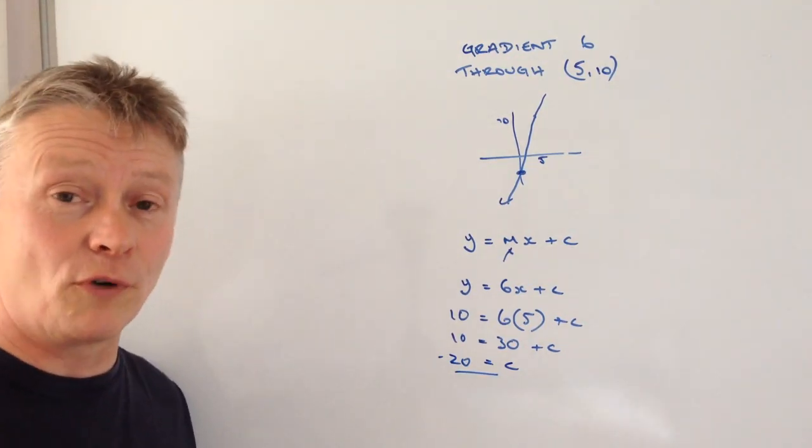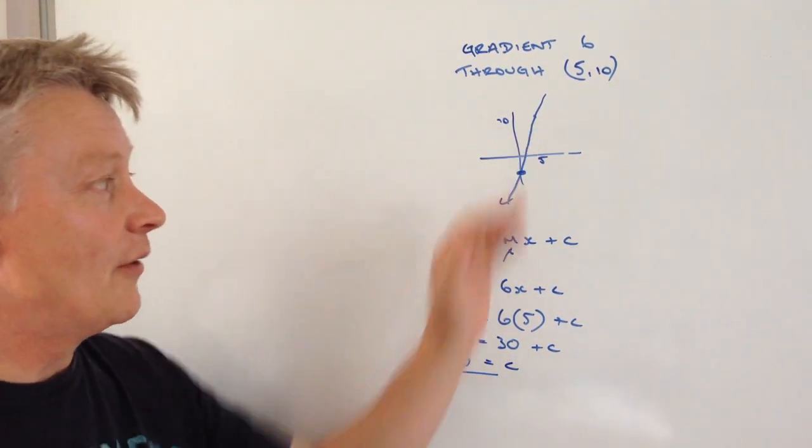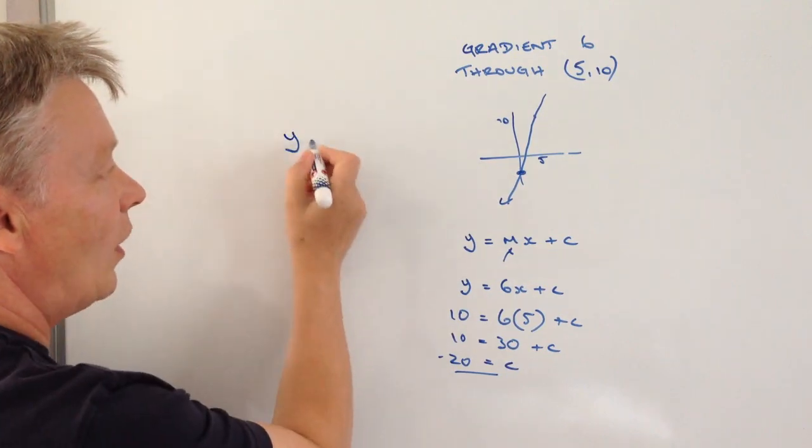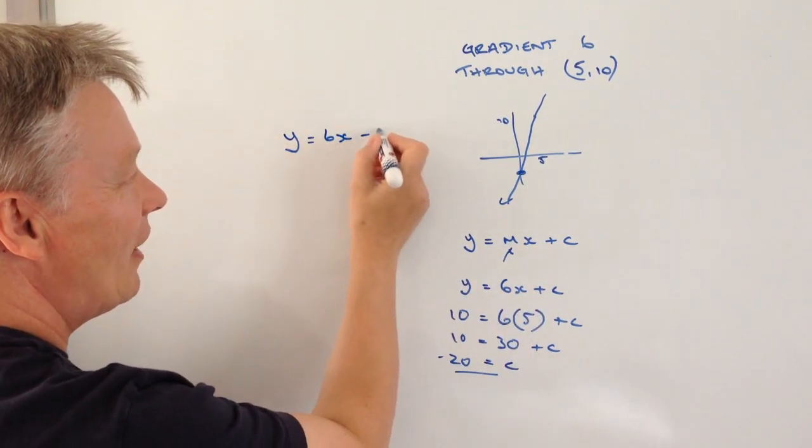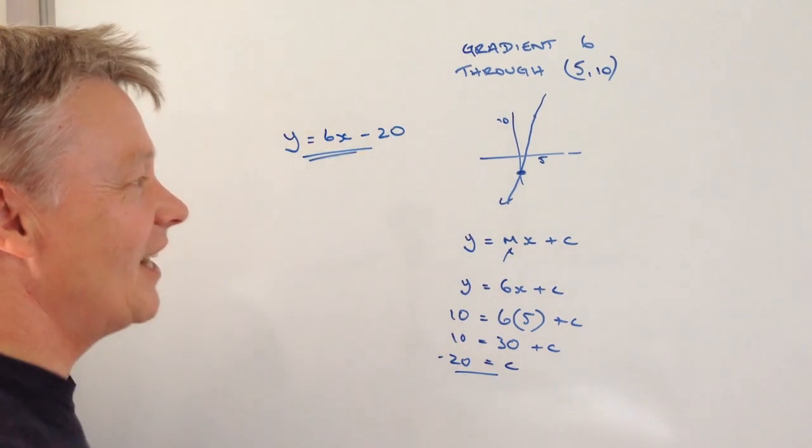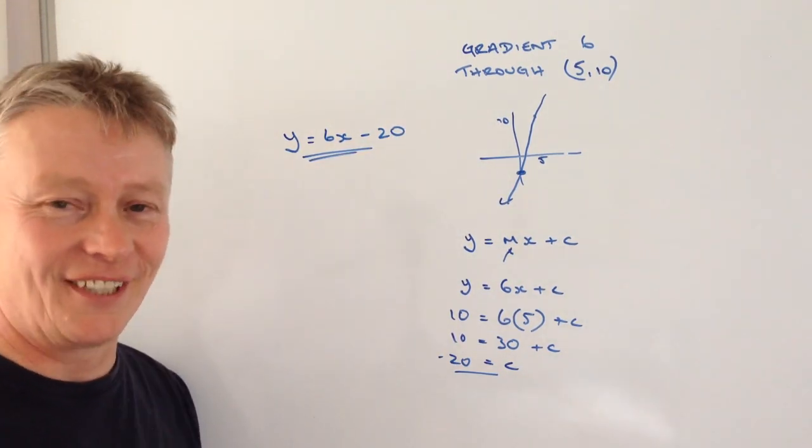So I'm now in a position where I can write the whole equation of this line as y equals six x minus twenty. And that will answer this particular question.